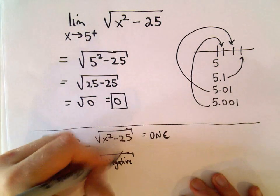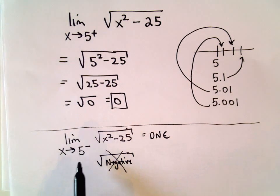And we don't take square roots of negative numbers. We're going to restrict ourselves to real numbers and this would give us an imaginary number. So it wouldn't really make sense to plug in 5 from the left.